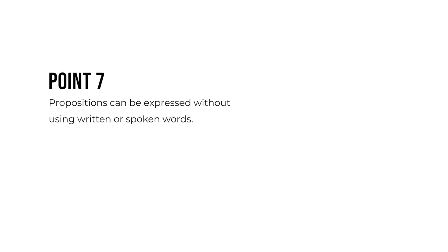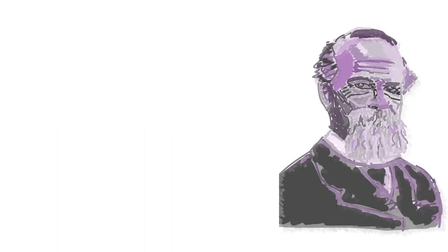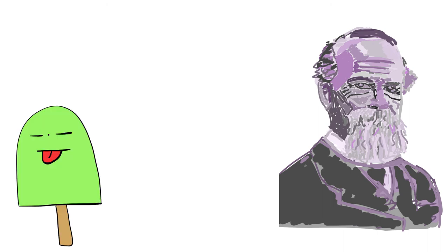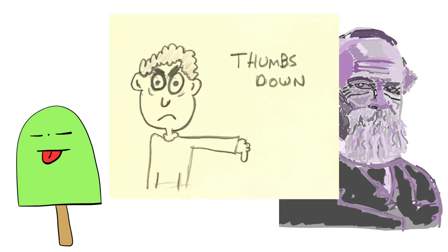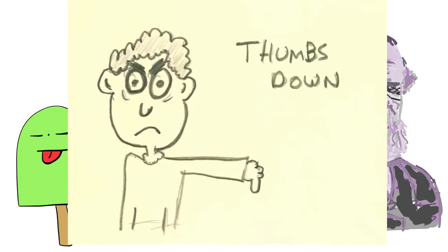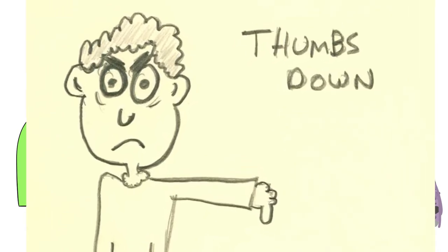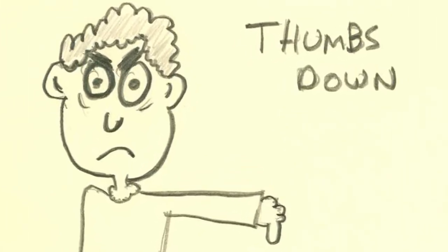Seventh, it's mistaken to think that propositions can only be expressed by words on a page or words spoken aloud. We can express propositions in all sorts of different ways without using words. For example, let's say there is a painting I didn't like. I might point to the painting, make a disgusted face, and gesture in a way that indicates my displeasure. Even though I haven't uttered a word, you have a clear sense of the proposition I am expressing.